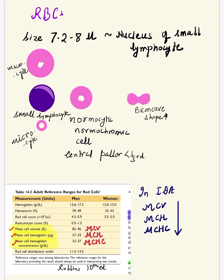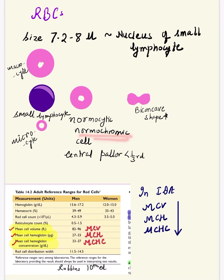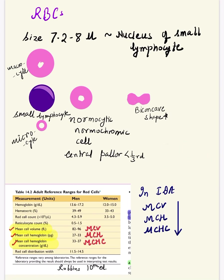The nucleus of the small lymphocyte is the size reference for a normocytic RBC. Regarding hemoglobin content, a cell is considered normochromic when the central pallor is less than one third of the diameter of the RBC. If the central pallor is more than one third, the cell becomes hypochromic. Hypochromic cells are seen in iron deficiency anemia, which produces microcytic hypochromic cells.